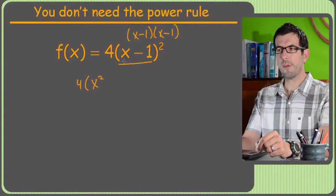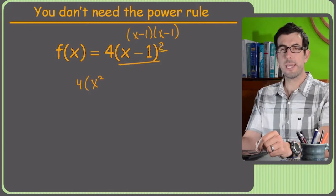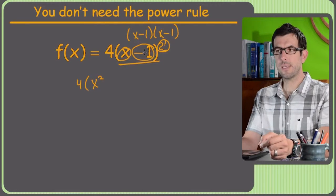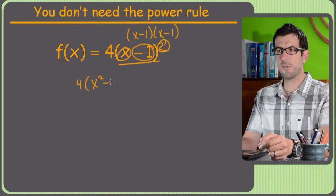The shortcut, whenever you have a binomial like this squared, is just square the first term. Then to get that middle term, you're just going to take the 2 times the second term times the first term. So that's going to be 2 times negative 1 is negative 2 times x is negative 2x.